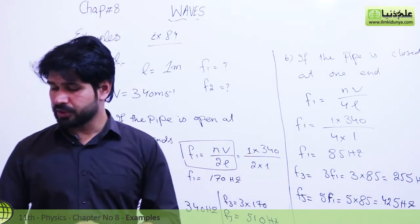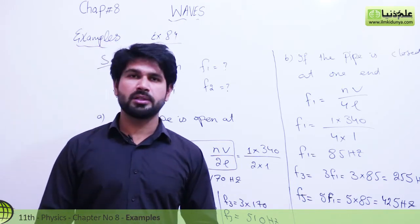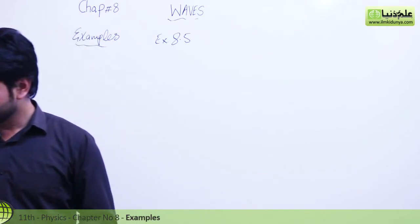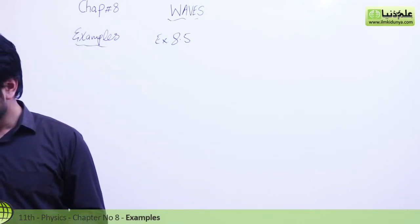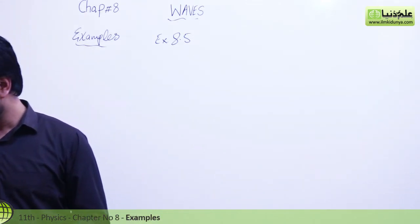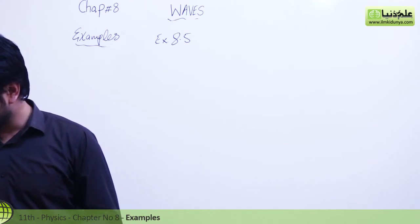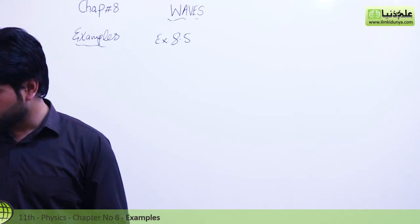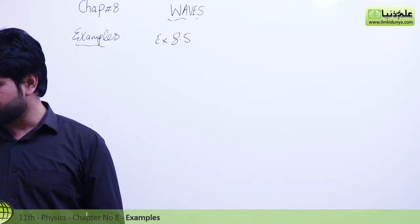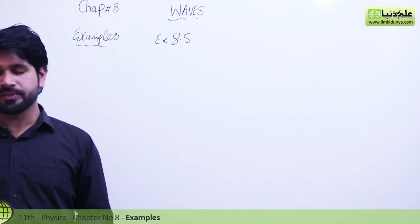Now we are going to solve numerical example 8.5. A train approaching a station at 90 kilometers per hour is sounding a whistle of frequency 1000 Hz. What will be the apparent frequency heard by a listener on the platform, and also when the train moves away from the station? The speed of sound is 340 meters per second.